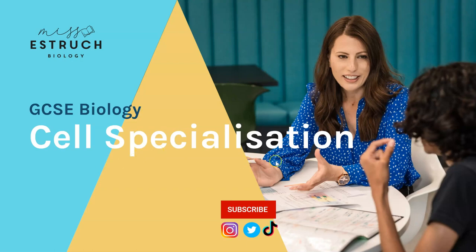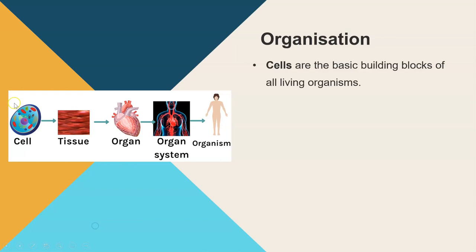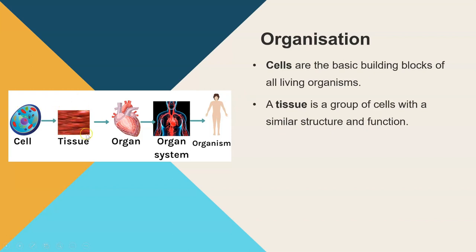In this video we're going to be covering a GCSE topic on cell specialization. I'm going to cover what we mean by a cell, tissue, organ, and organ systems, and then the whole organism. You need to know what all those structures mean before we look at how different cells are specialized for their function. The list of cells we're going to go through are those required for AQA biology. Organization refers to how all the different parts of a body - or a plant - are organized. Cells are the basic building blocks of all living organisms.